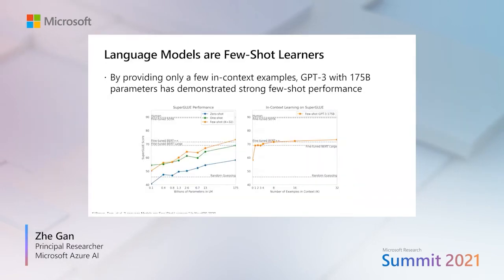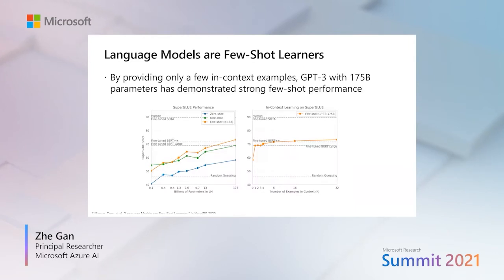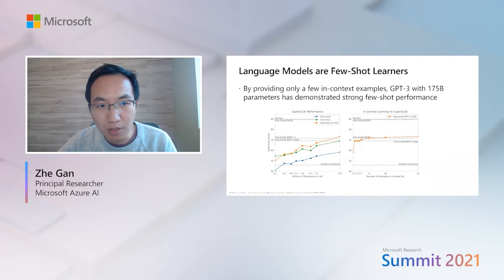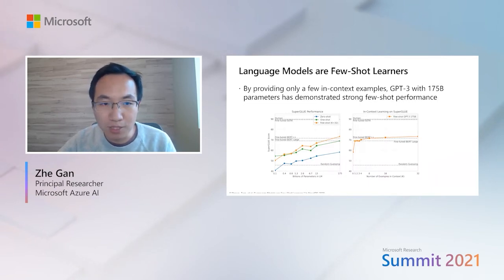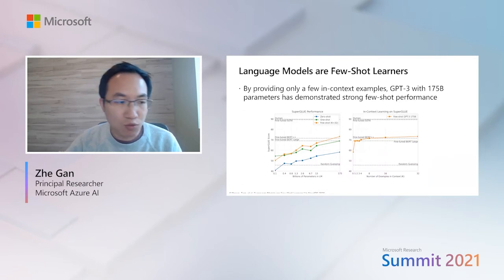An interesting phenomenon is that when the language model is scaled up, it can demonstrate very strong few-shot performance. That is, without any parameter update, when you provide only a few in-context examples, the model can adapt to new tasks very quickly. As you can see in this plot, on the popular SuperGLUE benchmark for language understanding, the GPT-3 model by OpenAI can demonstrate very strong few-shot performance.